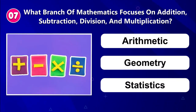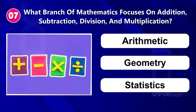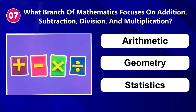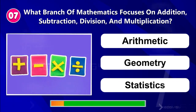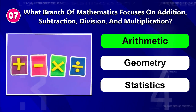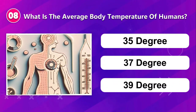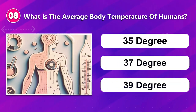Number seven: What branch of mathematics focuses on addition, subtraction, division, and multiplication? Arithmetic, geometry, or statistics. Number eight: What is the average body temperature of humans? 35 degrees, 37 degrees, or 39 degrees.